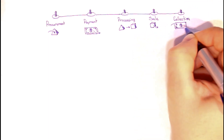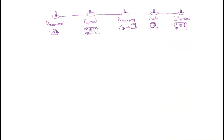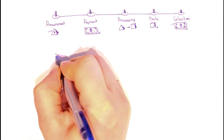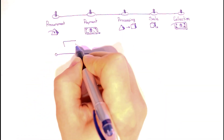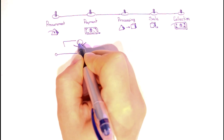Note that there is no cash activity at the procurement stage. The company receives raw materials but doesn't pay on the spot, experiencing a delay in payment. Therefore, the payment stage stands slightly forward in time. That gap explains the nature of accounts payable.